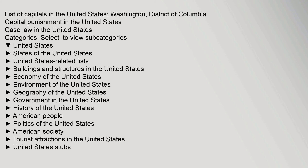Washington, District of Columbia. Capital Punishment in the United States, Case Law in the United States. Categories — select to view subcategories: United States, States of the United States, United States Related Lists, Buildings and Structures in the United States, Economy of the United States, Environment of the United States, Geography of the United States, Government in the United States, History of the United States, American People, Politics of the United States, American Society, Tourist Attractions in the United States, United States Stubs.